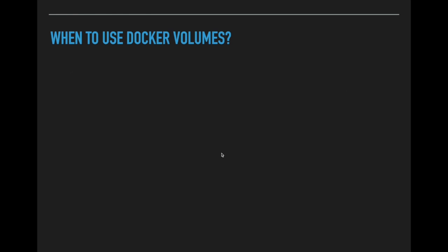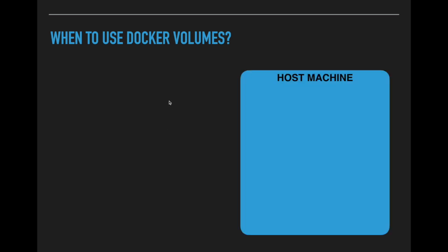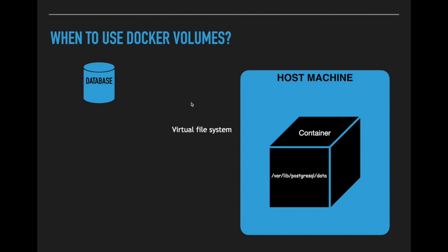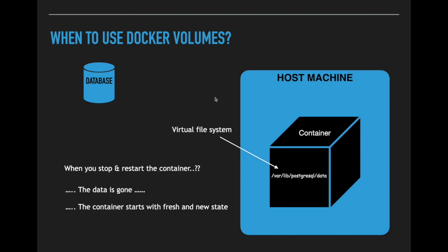Let us see what are the specific scenarios where we have to use Docker volumes. We know that containers run on some host machines and a Docker container has a virtual file system where the data is saved temporarily, but there is no persistence. What will happen if I stop and start the container? The data is gone — the container restarts with a fresh state.